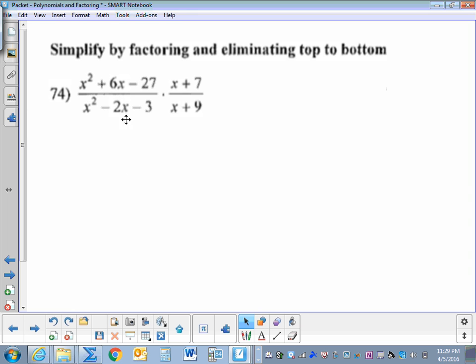74, go ahead and try that. You're going to factor this numerator, so you'll get two binomials and a third one on top. You'll have two binomials and a third one on the bottom, and then eliminate top to bottom.